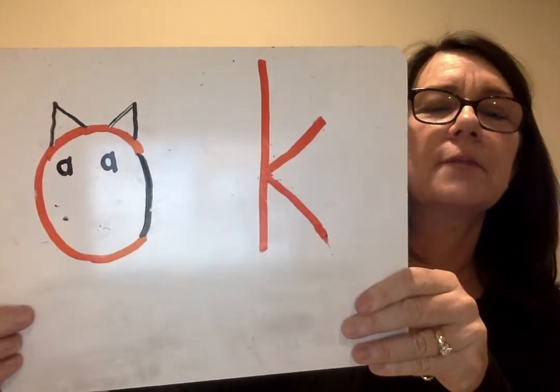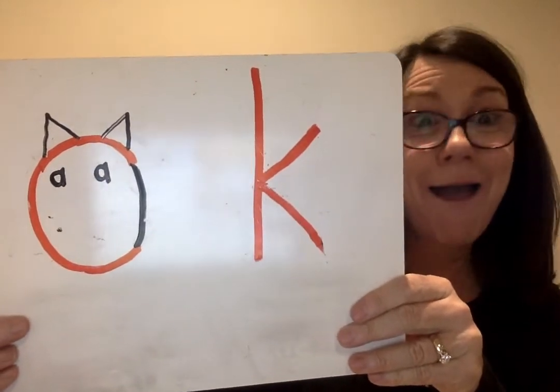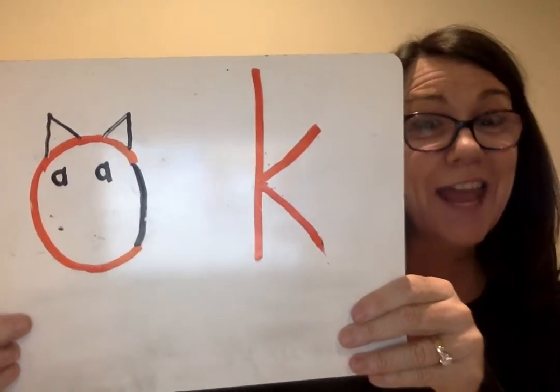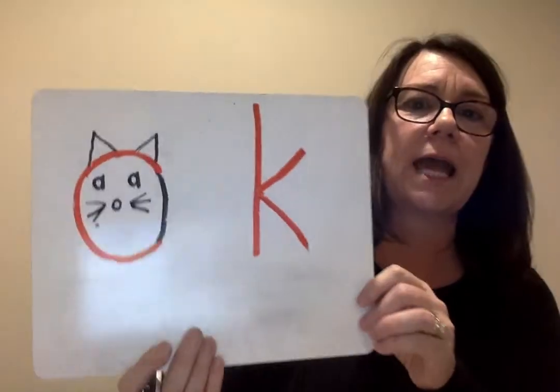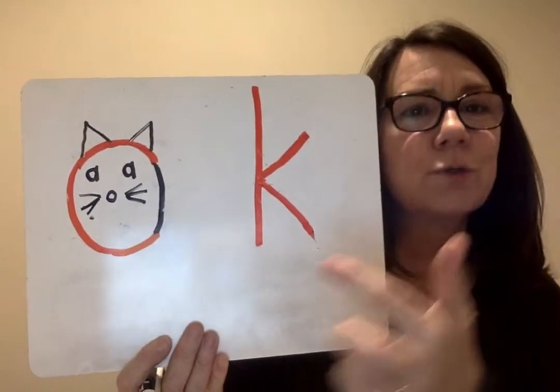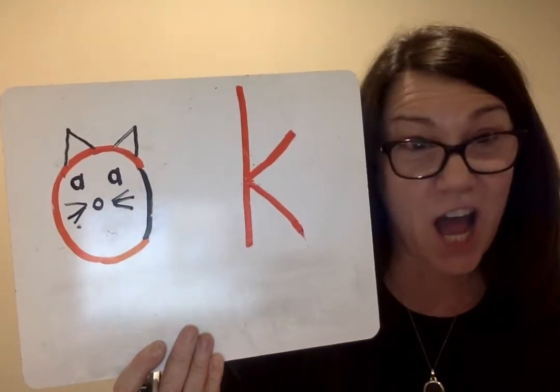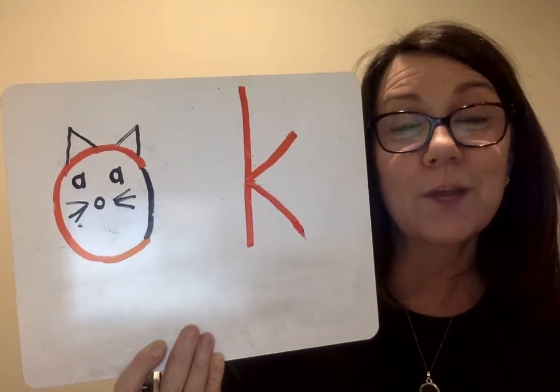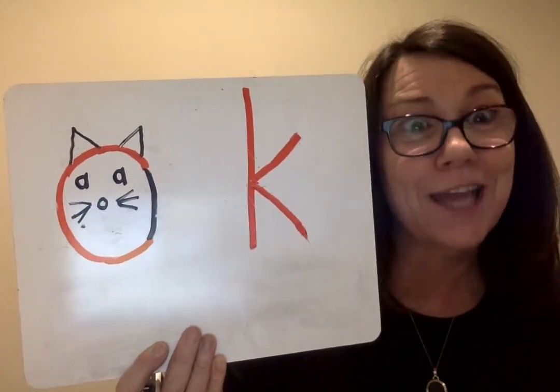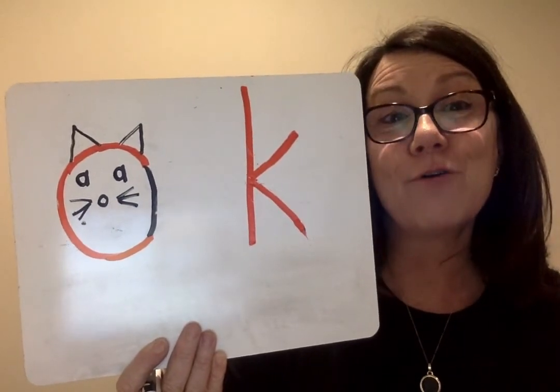Now I'm going to add the cat's eyes. Look closely — can you tell what I used to make the cat eyes? Yeah, it's lowercase A. So I put two lowercase A's for the cat's eyes. Now I'm going to give our cat a nose and a couple of whiskers. I bet you think my nose is a circle — it's not. My nose is a letter. What letter is in the shape of a circle? Right, it's lowercase O. So I've got A for eyes and O for the nose.